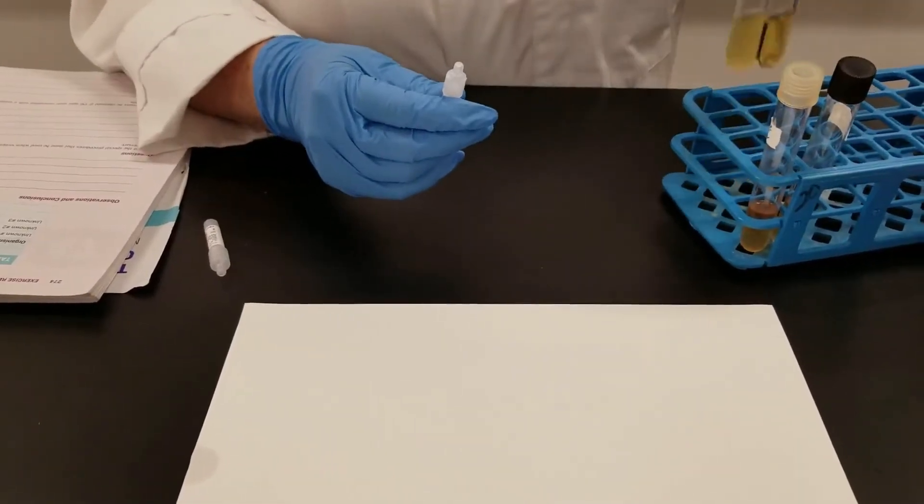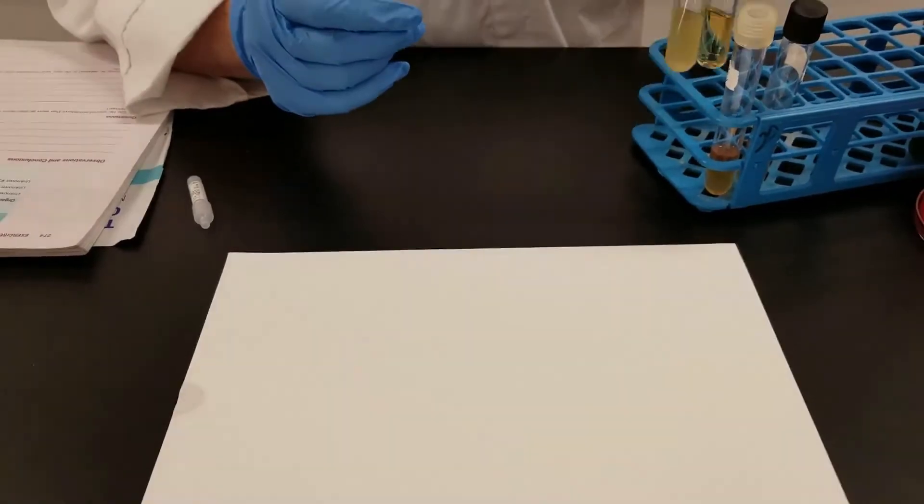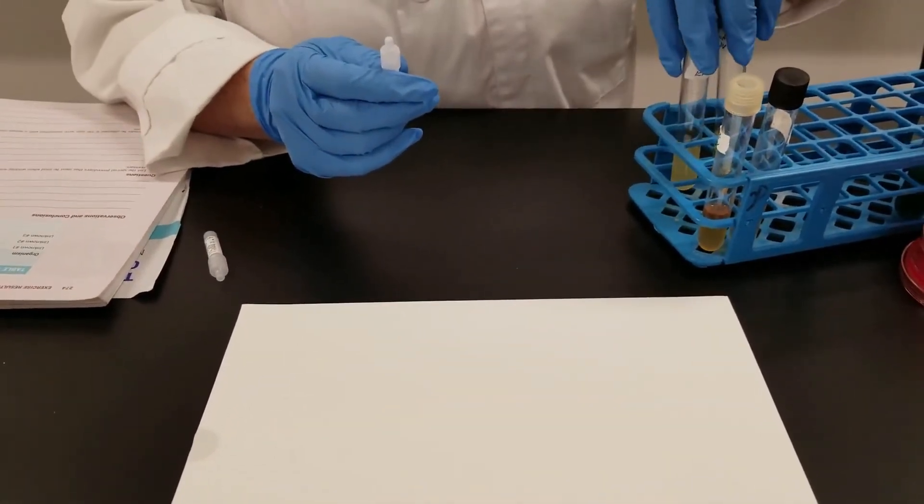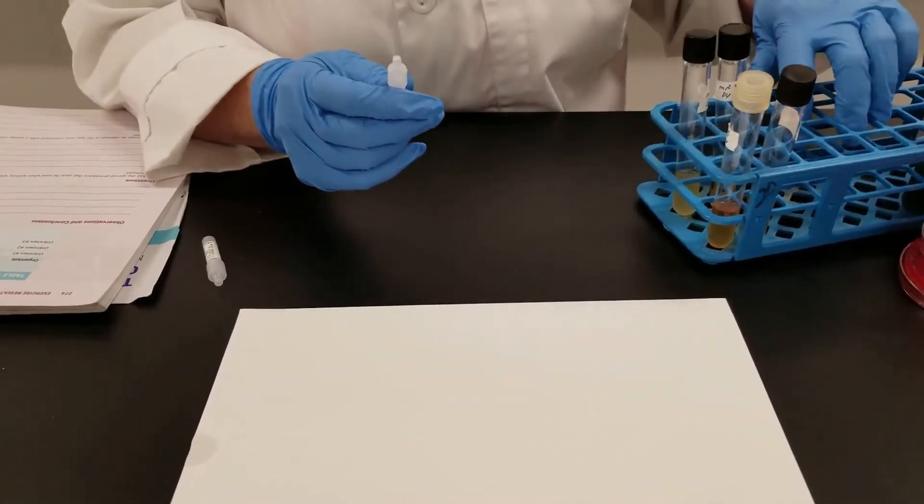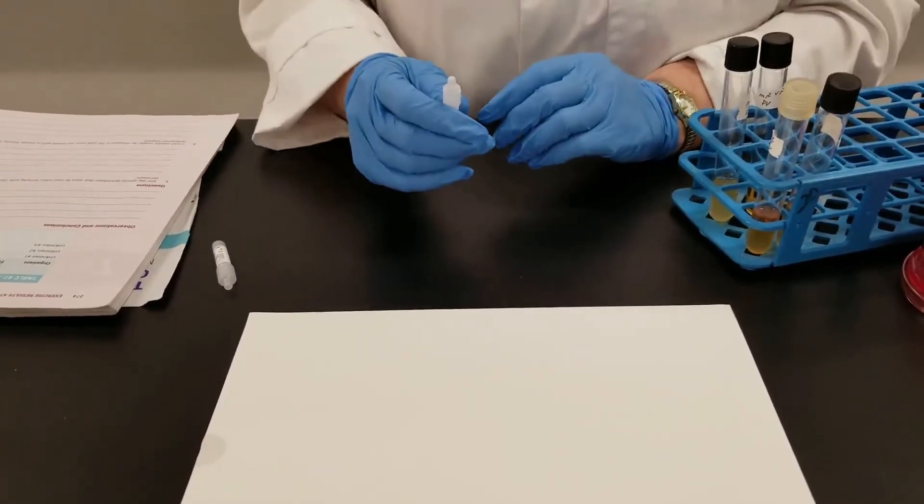The next test we are going to do is the VP, Voges-Proskauer test. Usually the media is the same as the MR, so you need to remember whenever you inoculate, MR and VP go together, which means you need two tubes - one for the methyl red, one for the VP.